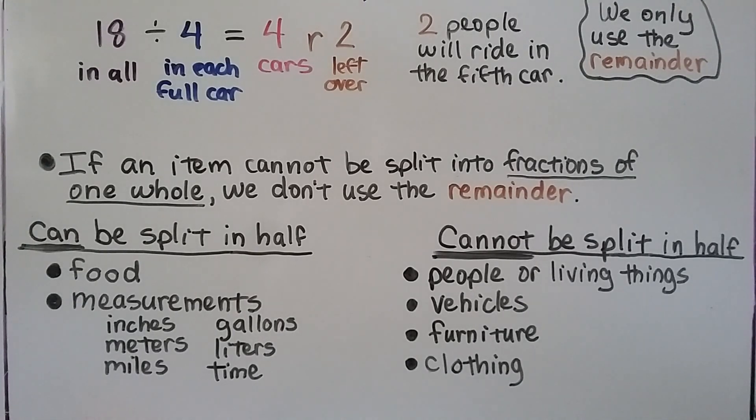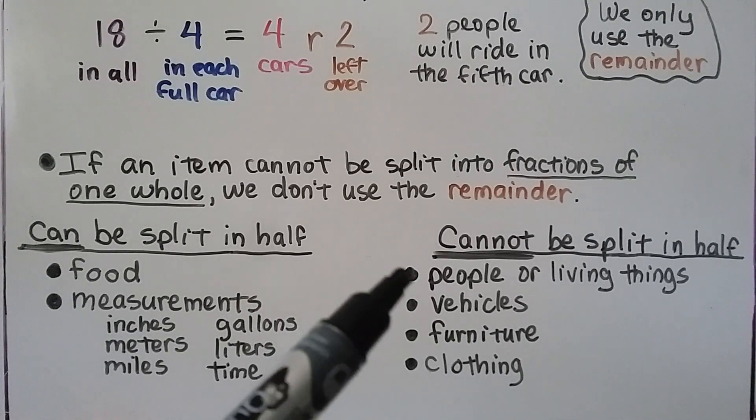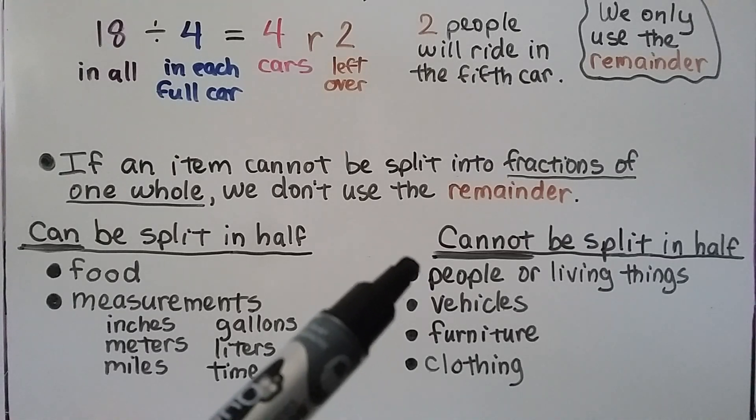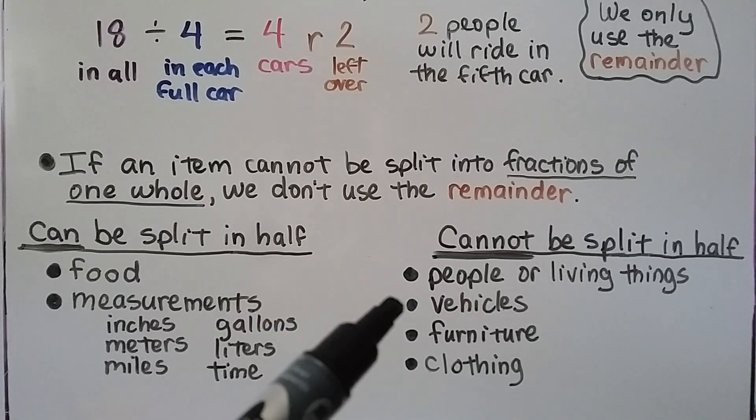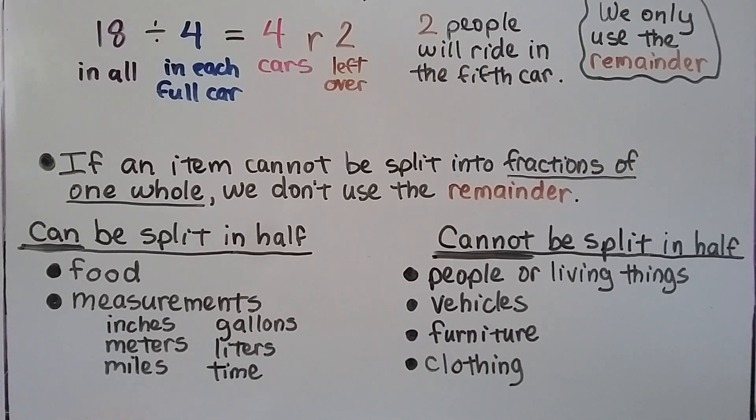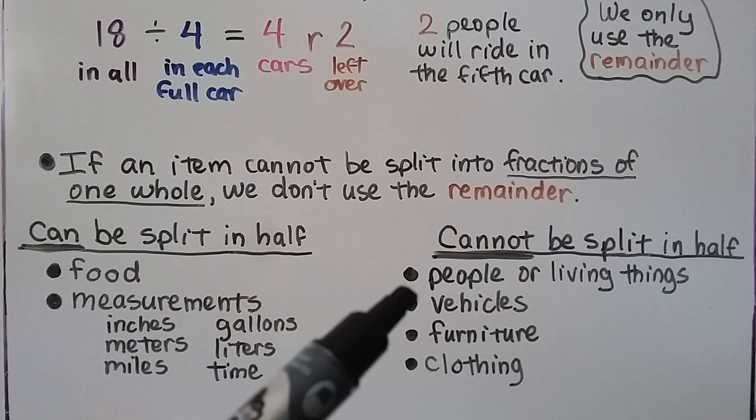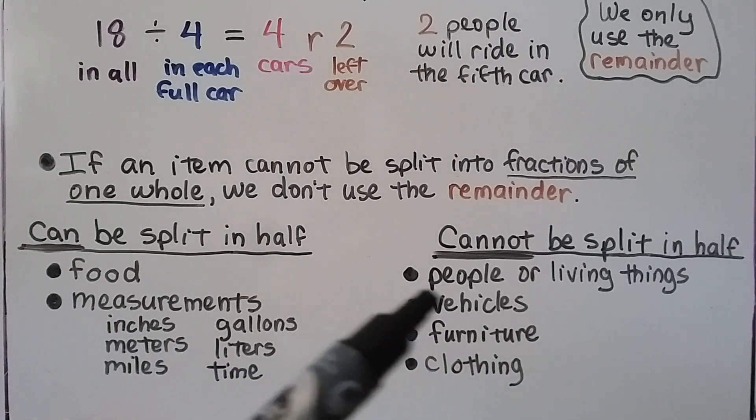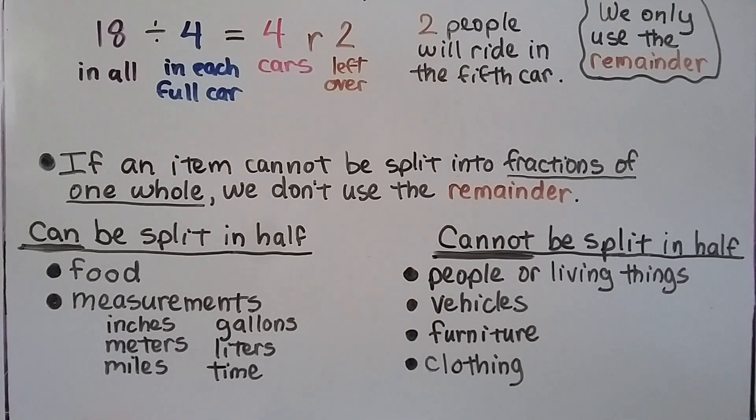Things that cannot be split in half, or split into fractions, would be people, or living things. You can't have a half of a person, or vehicles. A half of a car - if you had 8 people, and 6 people fit in a vehicle, you can't have them drive a fraction of a vehicle for the other 2 remaining people. It would have to be a whole other car, wouldn't it? We'd have to have 2 vehicles. You can't have half of a sofa, or half of a shirt. So some things cannot be split in half, and some things can.